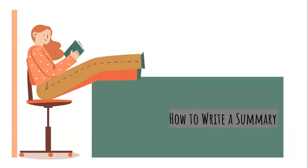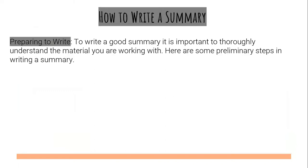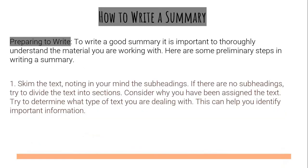How to write a summary. Preparing to write: to write a good summary, it is important to thoroughly understand the material you are working with. Here are some preliminary steps and strategies you can use when you summarize. First, skim the text, noting in your mind the subheadings. If there are no subheadings, try to divide the text into sections. Consider why you have been assigned the text, and try to determine what type of text you are dealing with — this can help you identify important information. Identify the primary ideas so you already capture the main message of the text.